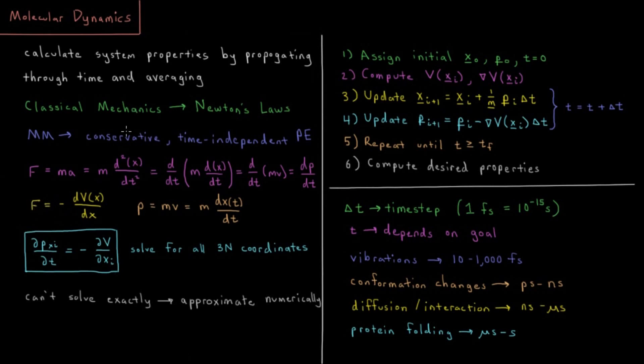And force additionally, for our conservative time independent potential energy function, force as we showed in the gradient video is equal to the negative first derivative of potential energy with respect to position. So we have momentum equals mass times velocity is equal to the mass times first derivative with respect to time. So if we put all these things together, what we have is that the partial derivative of the momentum of a particle in the x direction with respect to time is equal to the negative partial of potential energy with respect to x position. So this is basically what we'd say is the rate of change of our momentum is equal to the negative rate of change of our potential energy.